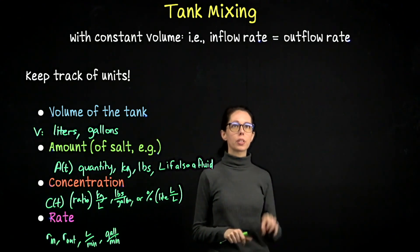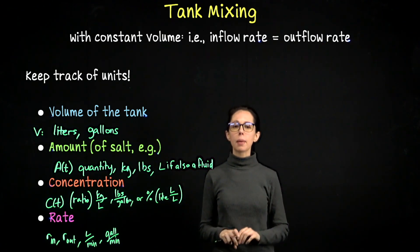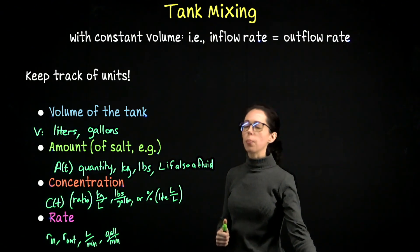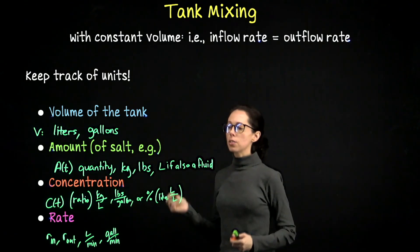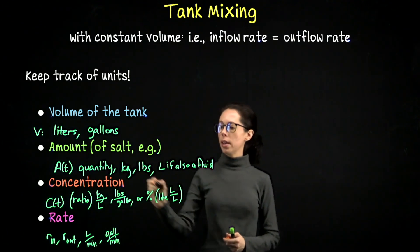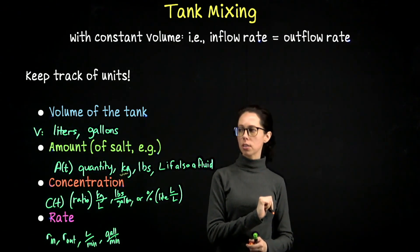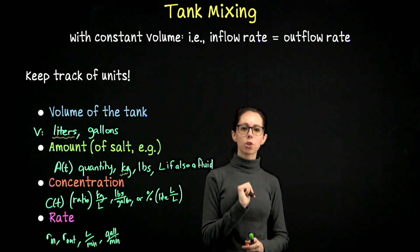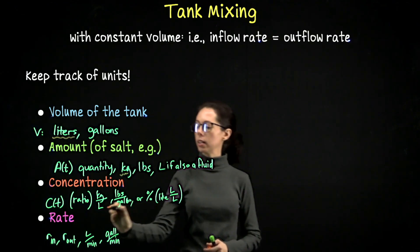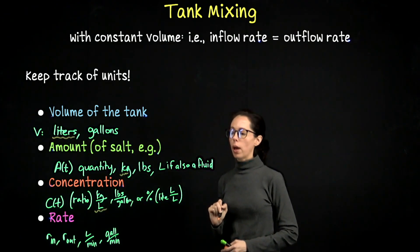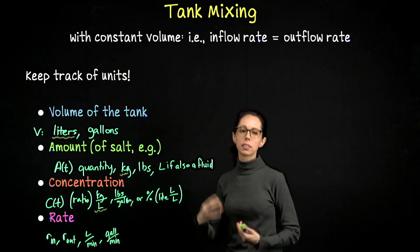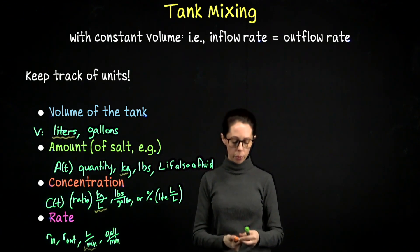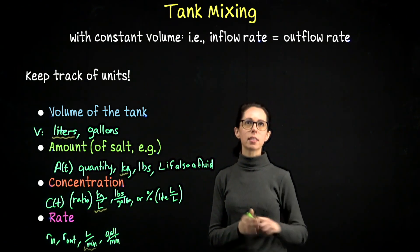Let's write down the differential equation, identifying each component using standard SI units. We'll assume we are tracking kilograms of salt in a tank measured in liters, so the concentration is kilograms per liter, and we have some number of liters coming in per minute. Those are the units we'll write for each quantity in this differential equation.